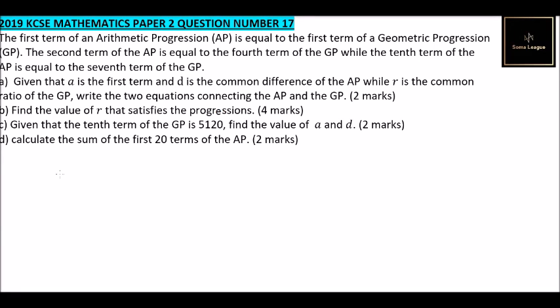Question number 17. We are told the first term of an arithmetic progression (AP) is equal to the first term of a geometric progression (GP). The second term of the AP is equal to the fourth term of the GP, while the tenth term of the AP equals the seventh term of the GP. Let's write that information. For the GP, the first term a is the same as a for the AP. The fourth term of the GP is written as a·r³, and this equals the second term of the AP, which is a + d.